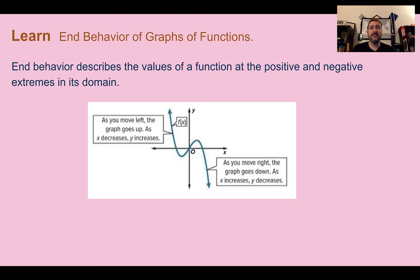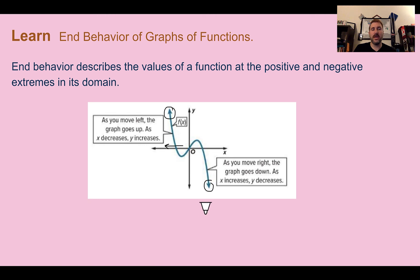Let's learn end behavior of graphs of functions. End behavior just describes the function's values at the positive and negative extremes, or the ends. What you're going to be looking for are the little arrows at the end of the graph. For this one, as you move left — as you're going left of the x-values in the domain — the y-values are increasing; they would keep going up. On the other end, as you move to the right, the graph seems to keep going down. So as x increases, y is decreasing.